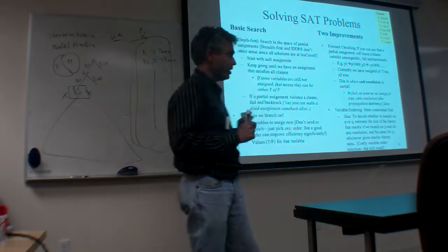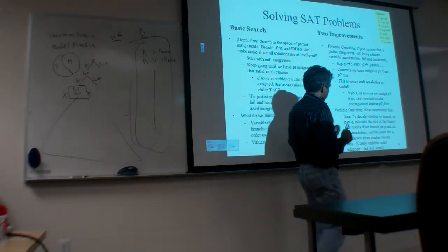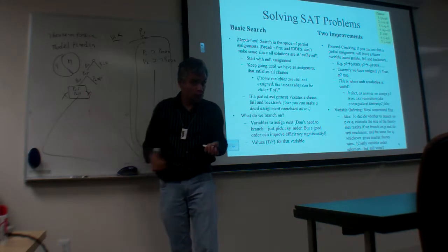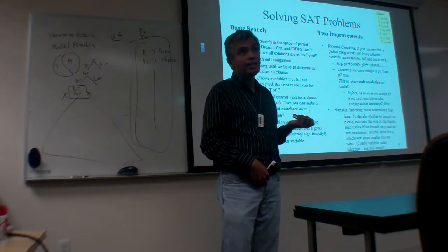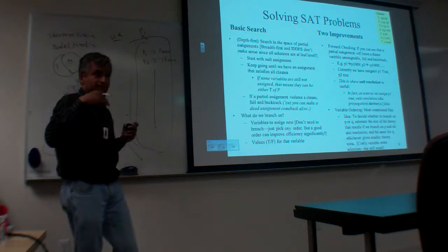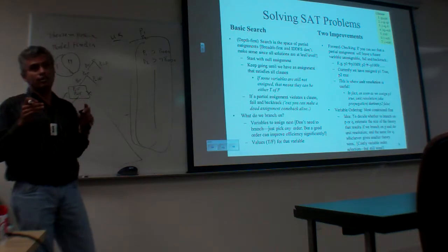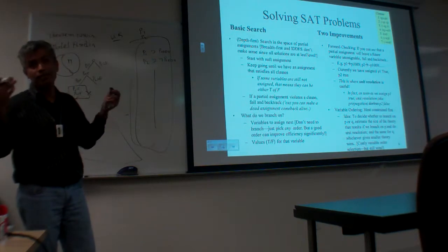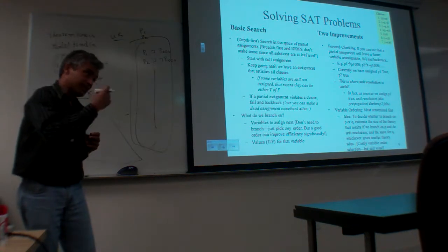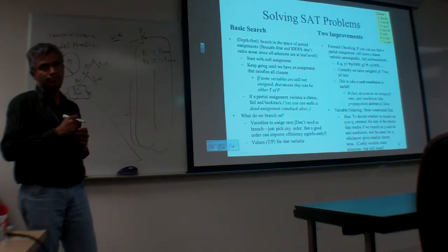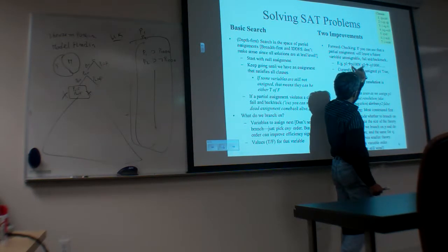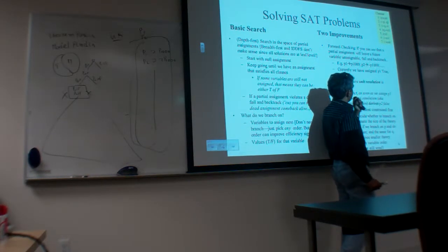Theorem proving and model finding — they are yin and yang. At each level you can intersperse them. You can either branch, or say the current branch is not worth going forward — which is inference/theorem proving. Saying I will branch is called search. Search and inference are yin and yang. Model finding and theorem proving are yin and yang. Its practical implication: while doing satisfiability solving, you start using unit resolution, which you understood as part of theorem proving.